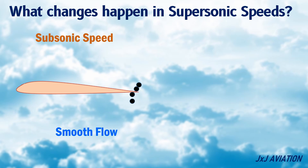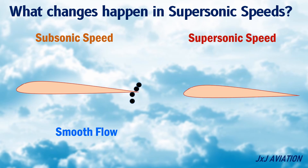However, at supersonic speeds the air particles do not have sufficient time to adjust as per the airfoil's shape and start to pile up in front of the airfoil. A thin layer is formed ahead of the leading edge after which the particles start piling up. This thin layer is called a shockwave.